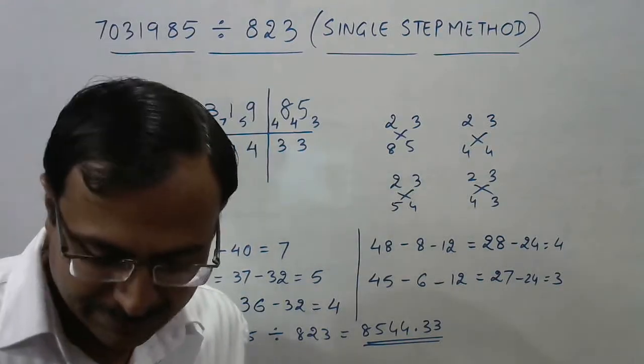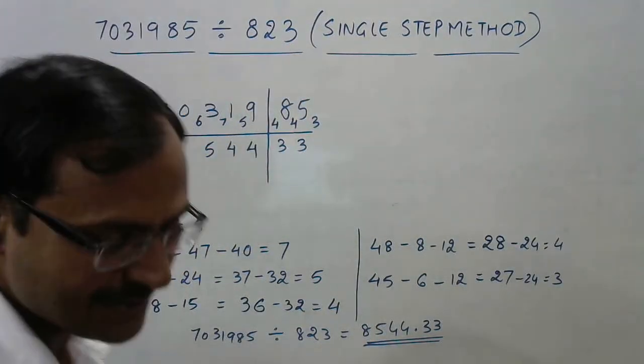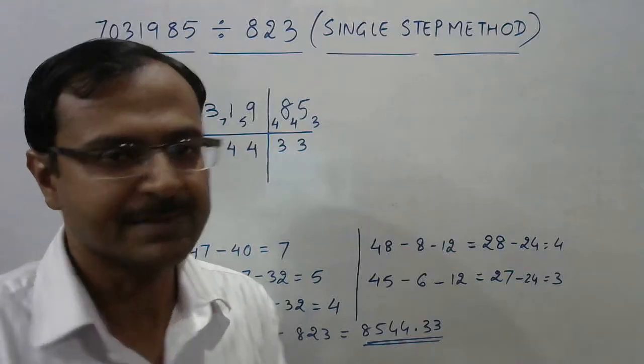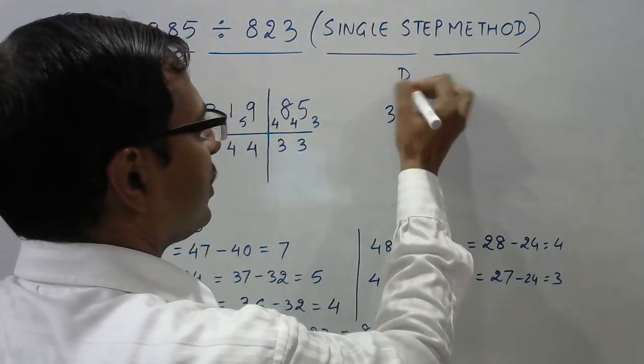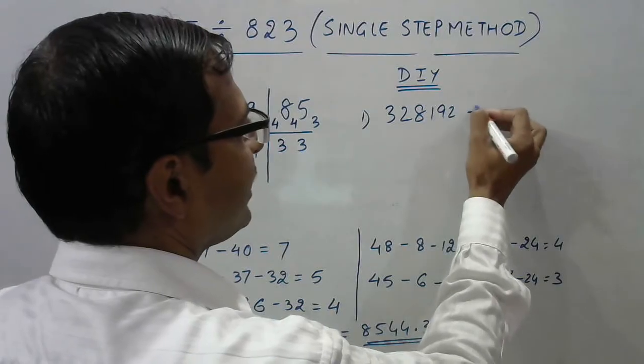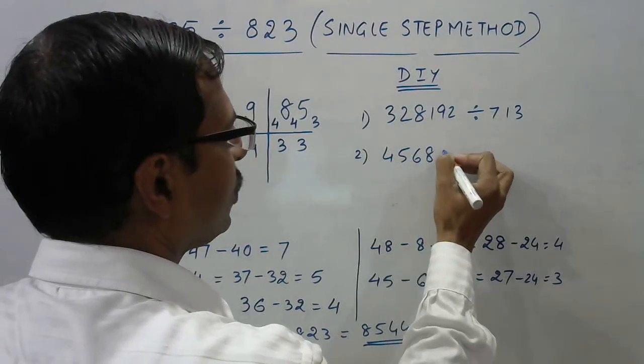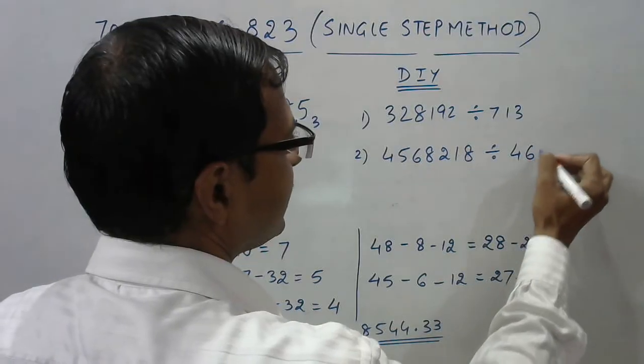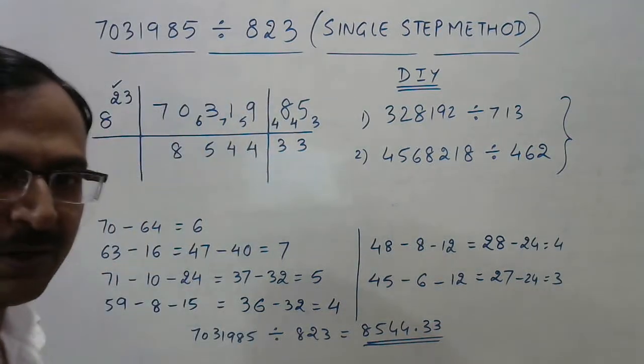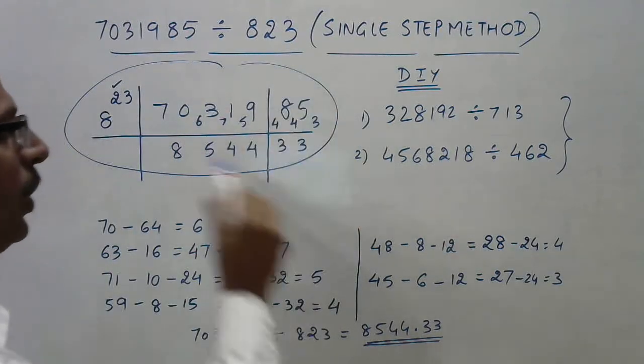It might seem quite interesting, but without practice there's nothing. I'll give you one or two questions to try yourself. You can find the answer up to two or three decimal places as per your convenience. This is do-it-yourself questions. First one is 328192 divided by 713, and the second one is 4568218 divided by 462. Try to find out these two questions using this method. I am sure you are going to find it interesting enough.